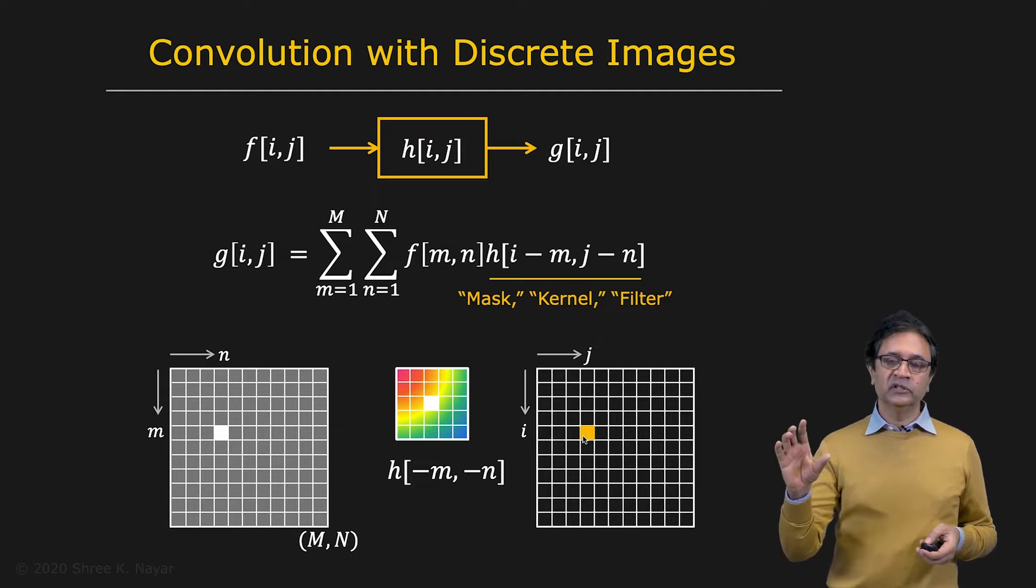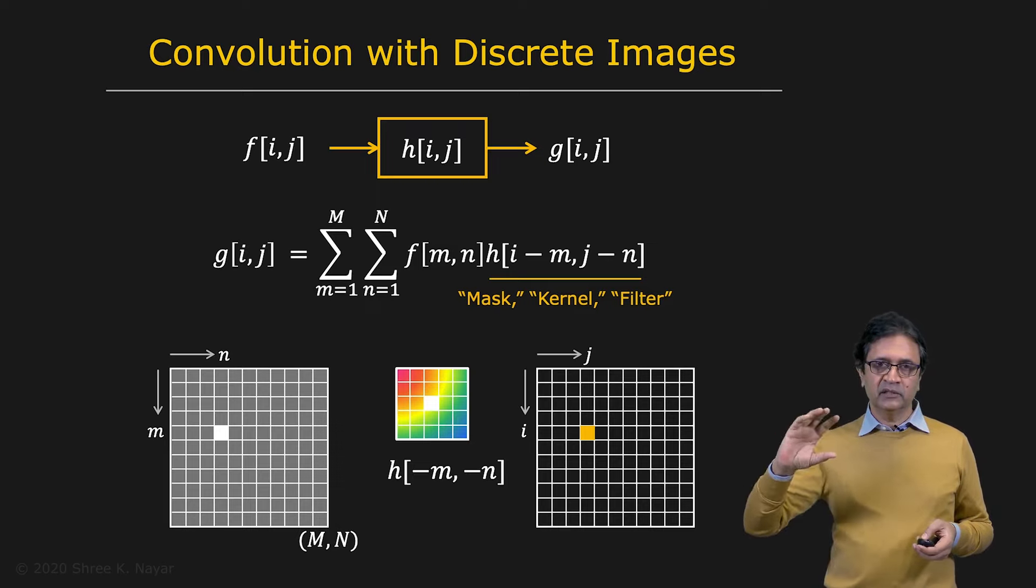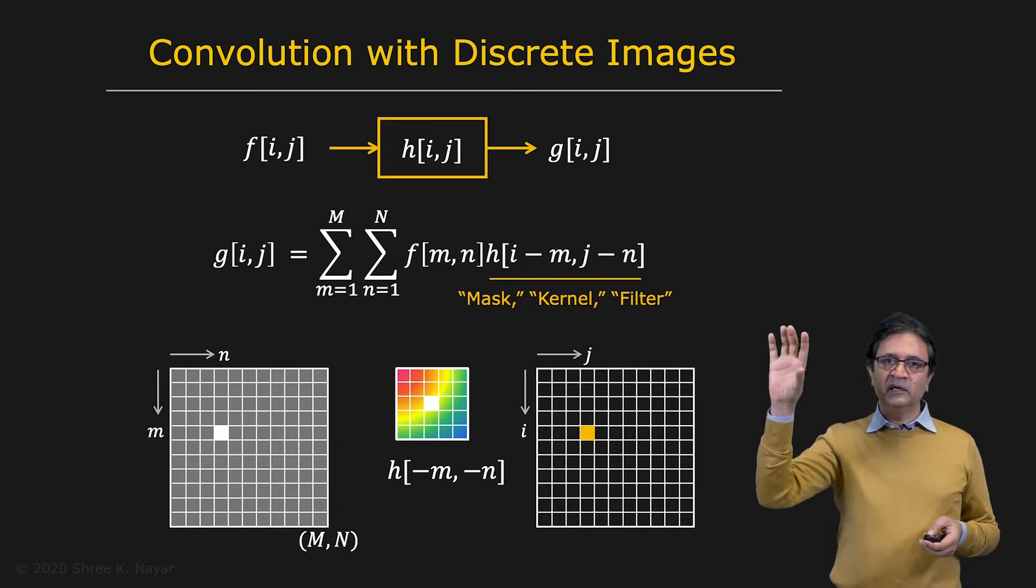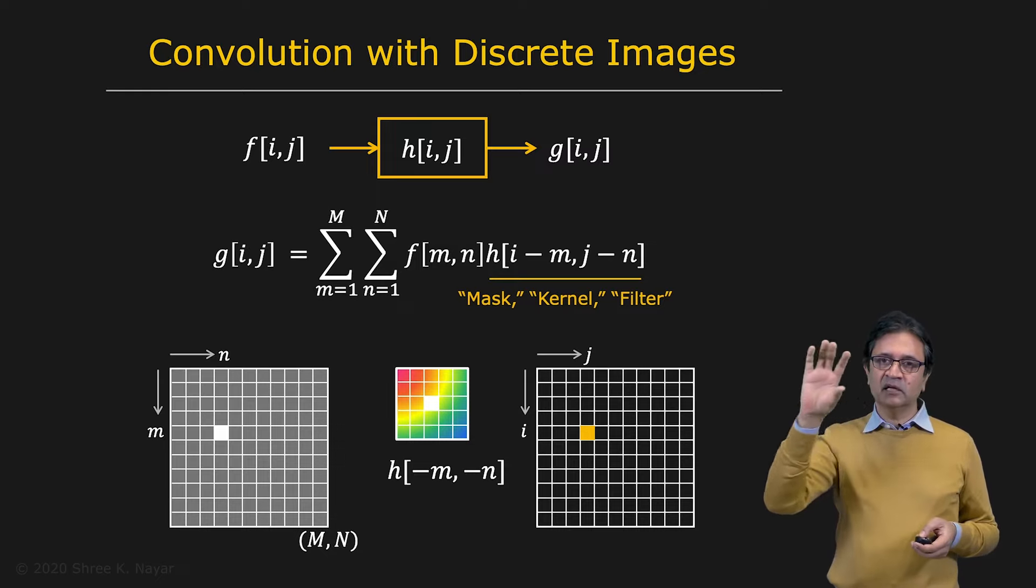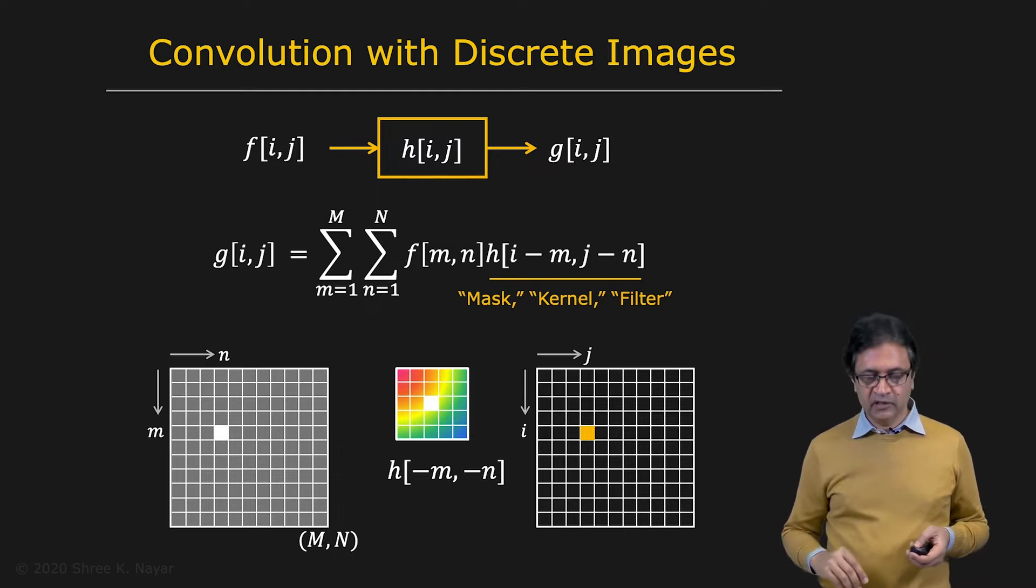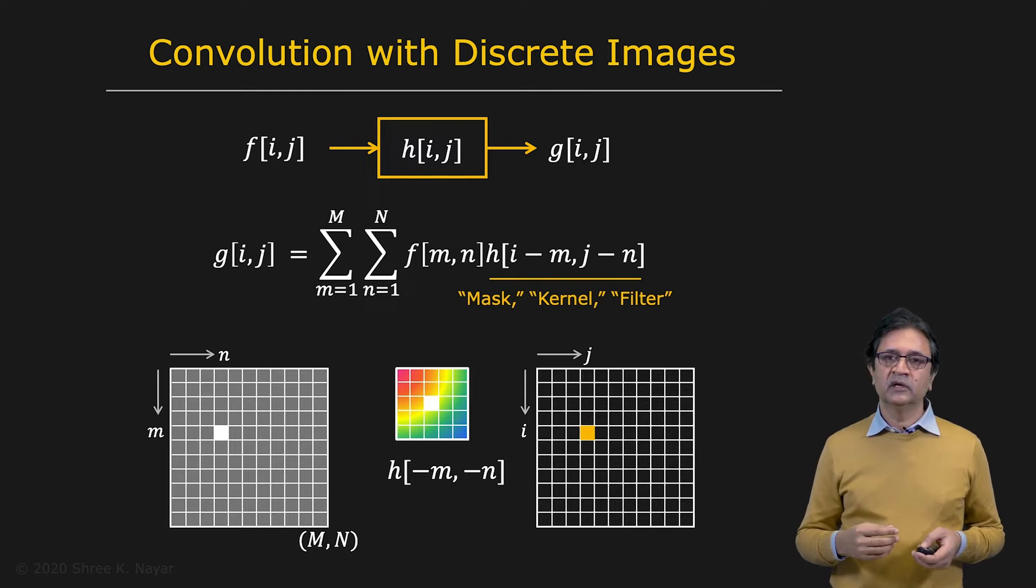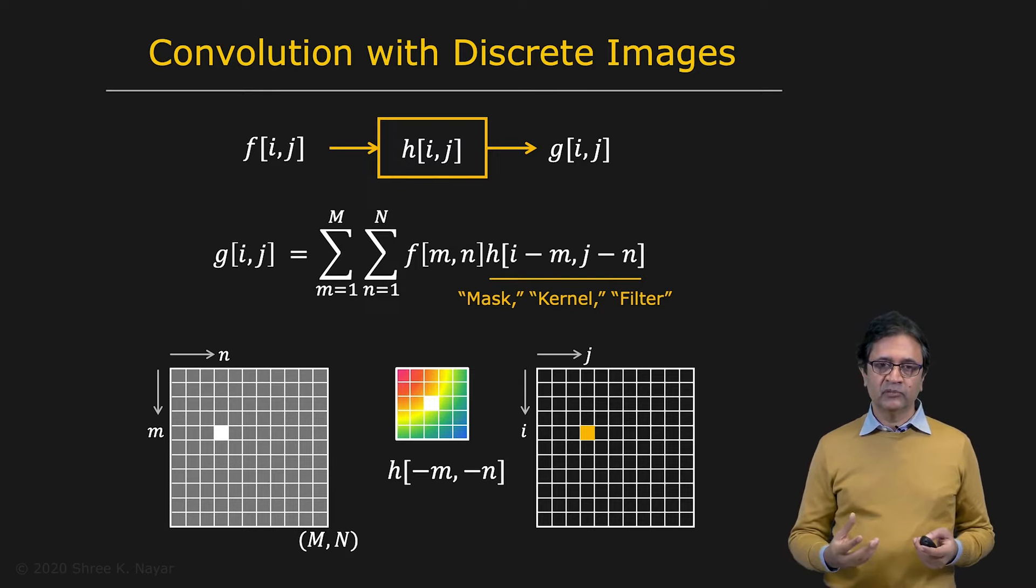So if you wanted to get all of G, you're going to do the same thing. You're basically going to take your H, flip it in one direction, flip it in the other direction, and then you're going to slide it over the entire image, raster scan it, and at each point, you're going to do the operation that we just described, and that gives you G. Very simple. You can imagine that in terms of writing a program to do this, this is a very simple operation.